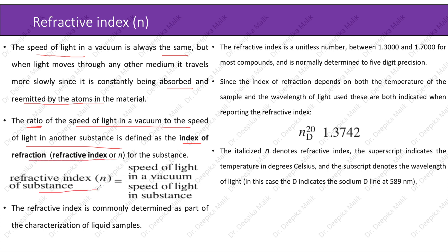The formula is given here. The refractive index is commonly determined as part of the characterization of liquid samples. The refractive index is a unitless number between 1.3000 and 1.700 for most compounds and is normally determined to five digit precision. Since the index of refraction depends on both the temperature of the sample and the wavelength of light used, these are both indicated when reporting the refractive index.